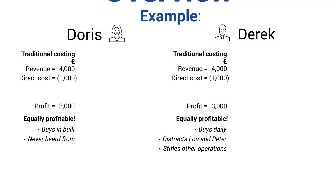This stifles operations because Peter is working on the till trying to process Derek's order, but Derek is talking to him, so he's not dealing with other customers. There's also an opportunity cost because Lou runs an internet business and Peter is supposed to be packing boxes for online deliveries, but when Derek is talking to him he can't do that. As a result, Lou conducts an analysis and finds that Doris's daily cost is zero, but Derek actually costs the organisation £15 a day just from coming in and causing disruptions.